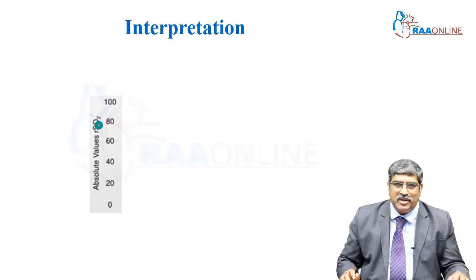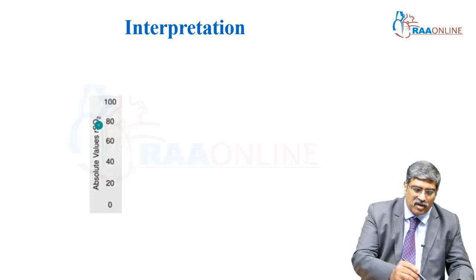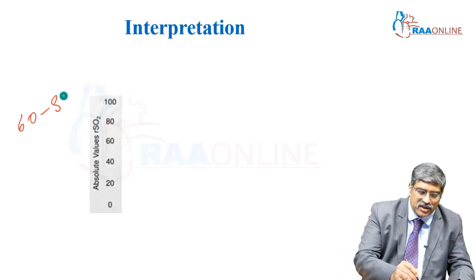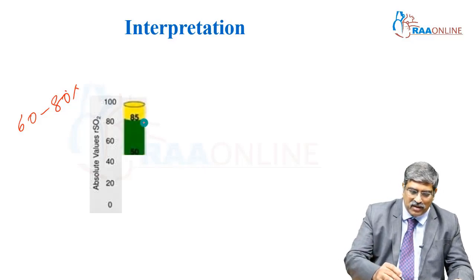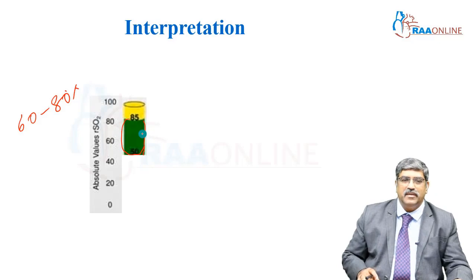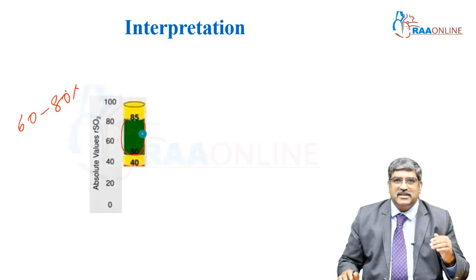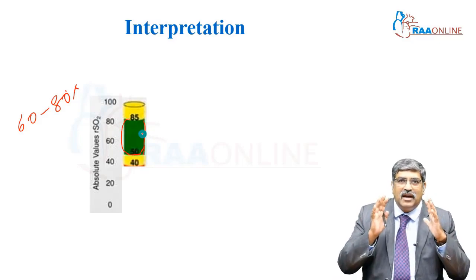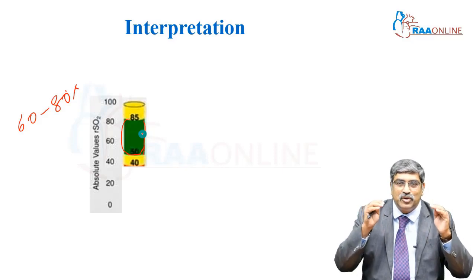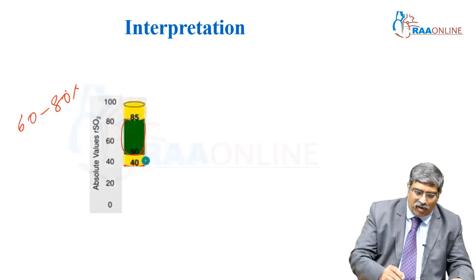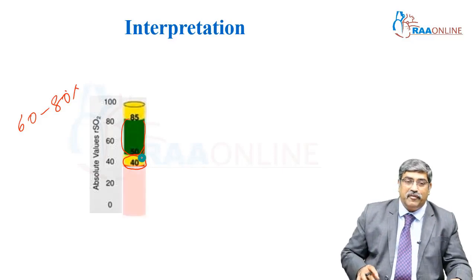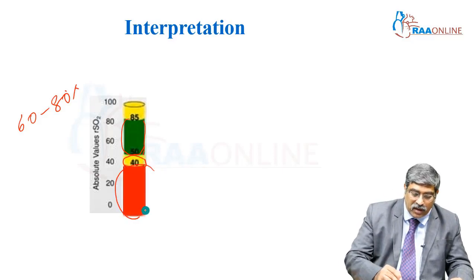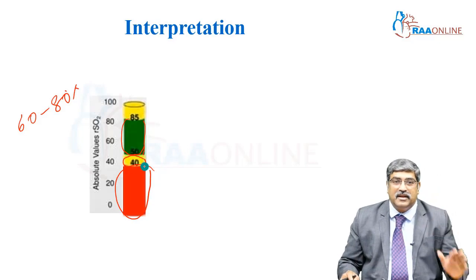Coming to the interpretation: the normal value is between 60 to 80 percent — shown as the green area on the display. Anything less than 50 should trigger an alarm and you should intervene. At 40, you definitely have to intervene, and if it goes below 40, it is a critical level.